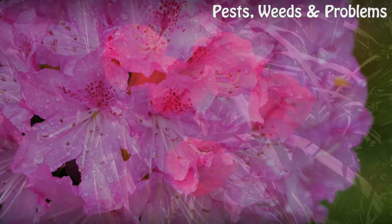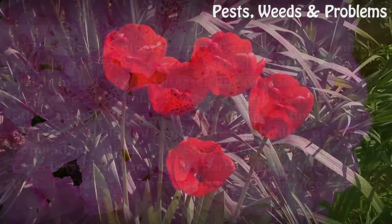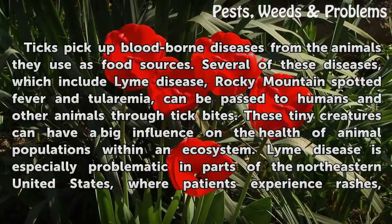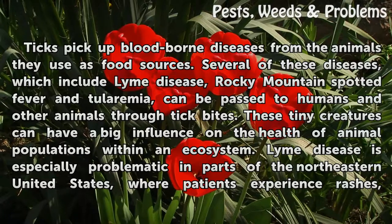Disease Vector. Ticks pick up blood-borne diseases from the animals they use as food sources. Several of these diseases, which include Lyme disease, Rocky Mountain spotted fever, and tularemia, can be passed to humans and other animals through tick bites.